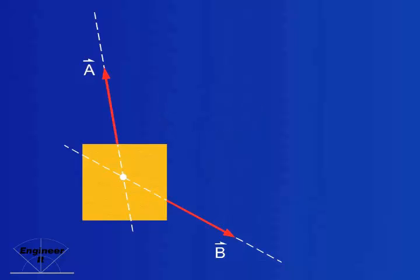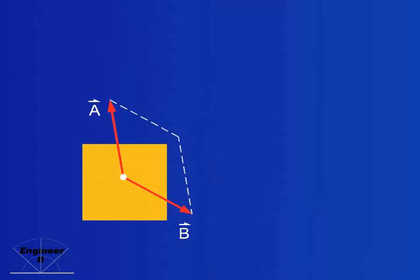It is convenient to slide both vectors to this concurrent point, as it enables us to use the parallelogram method to find their resultant vector. This resultant can also act anywhere on its line of action.